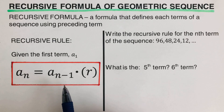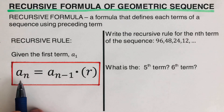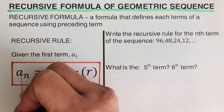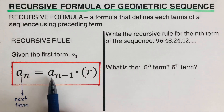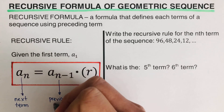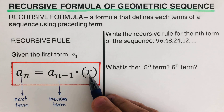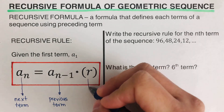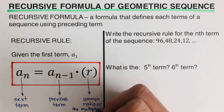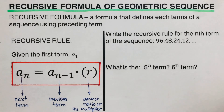Let's define this equation in layman's terms. When we say a_n, this is referred to as the next term. a_{n-1} is the previous term, and r is the common ratio — also called the multiplier. This formula tells us that once we know the previous term, we will be able to determine the term next to it.